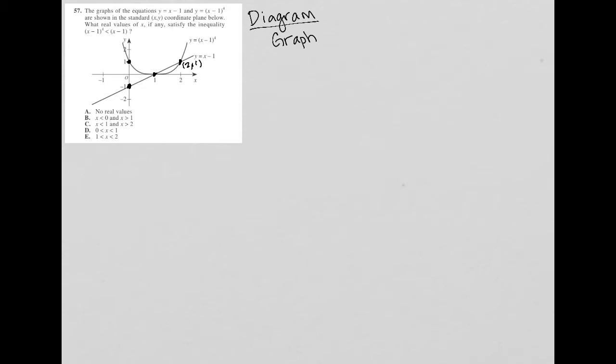So let's read the question and see if any of what I just said becomes useful. The question says the graphs of the equations Y equals X minus 1, so that's the linear line here that we have, and Y equals X minus 1 to the 4th, which is the parabolic looking shape that we have here, are shown in the standard XY coordinate plane below.